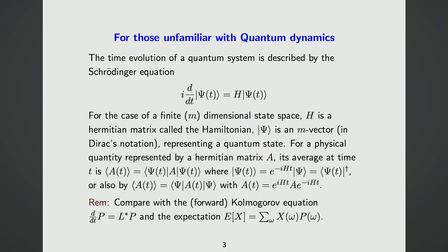From an algebraic and formal point of view there are many similarities, and one can do many similar calculations. But when calculating physical quantities—especially averages—there is a big difference. In the Markov process case, the expectation is linear in the probability P, whereas in quantum mechanics the quantum average is quadratic in psi. This difference technically creates a huge gap and can give us headaches when trying to do analogous calculations.